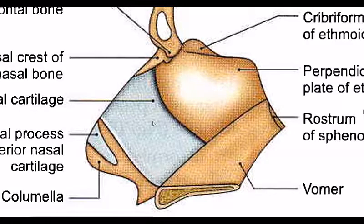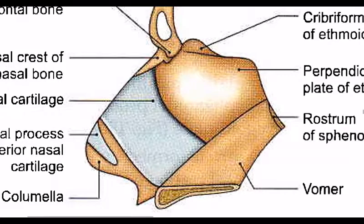The nasal septum is normally in the median plane. If it is deflected from any side, or if someone has overgrowth, then it will not remain in the median plane — this is called a deviated nasal septum.